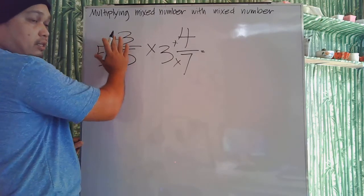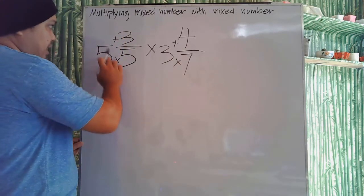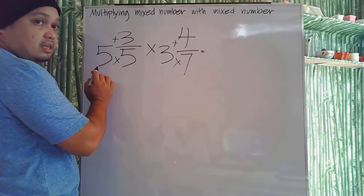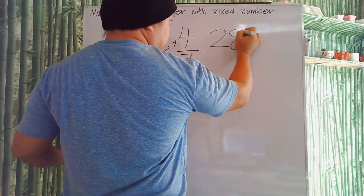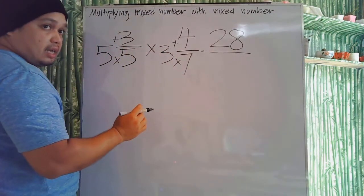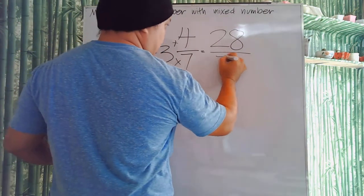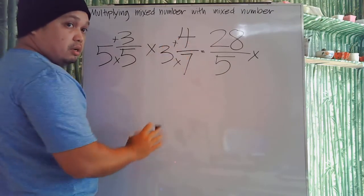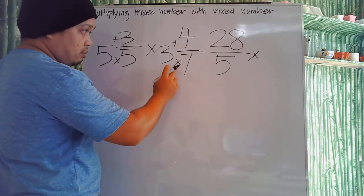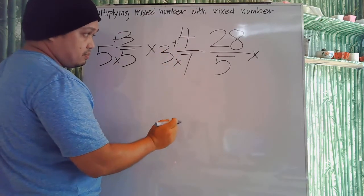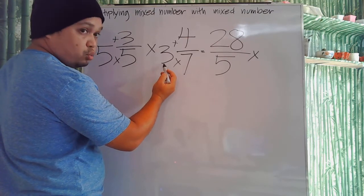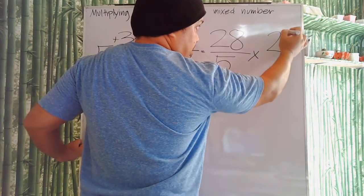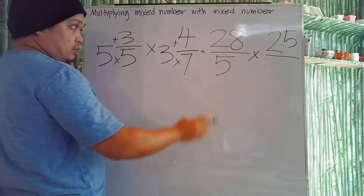To change 5 and 3 fifths into an improper fraction: 5 times 5 is 25, and 25 plus 3 is 28, so we have 28 over 5. Now let's change 3 and 4 sevenths: 7 times 3 is 21, and 21 plus 4 is 25, so we have 25 over 7.